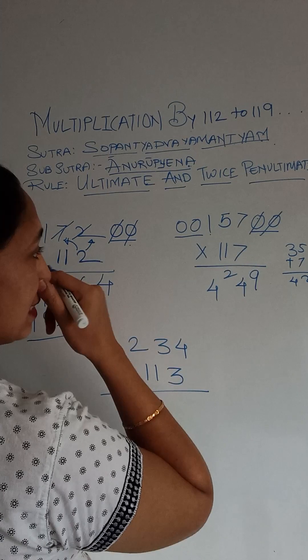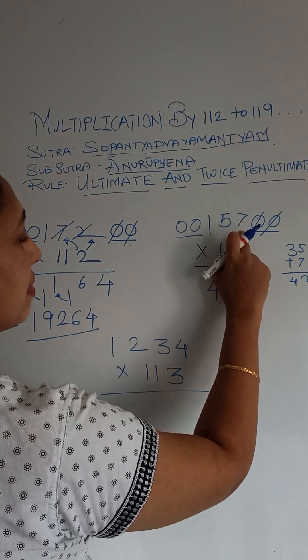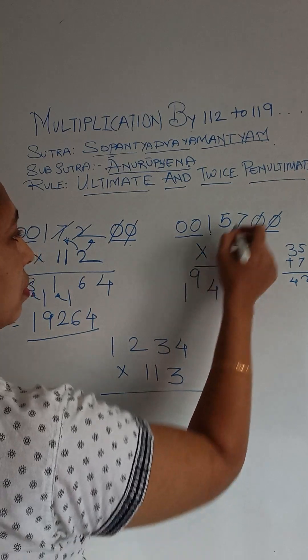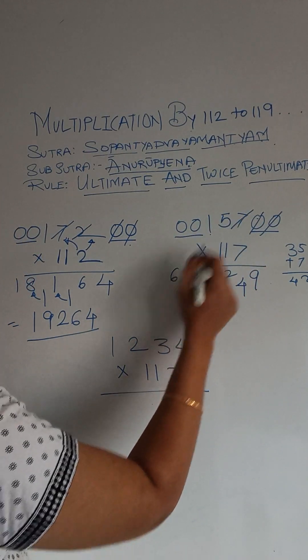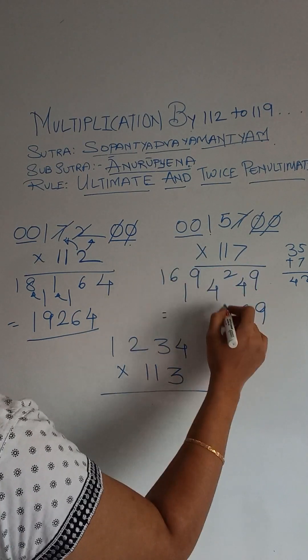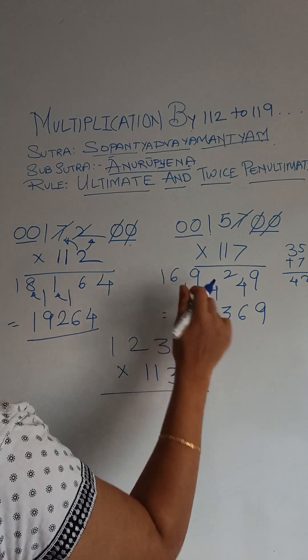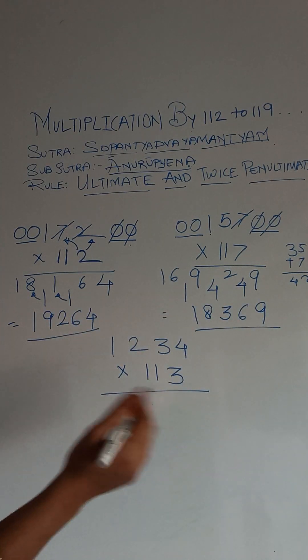And 7 into 1 is 7. 7 plus 5 is 12. 12 plus 7 is 19. And then we have got 5 plus 1 is 6. And then 1. So you have finally your answer is 13, 6, 7, 8 and 1. Alright.